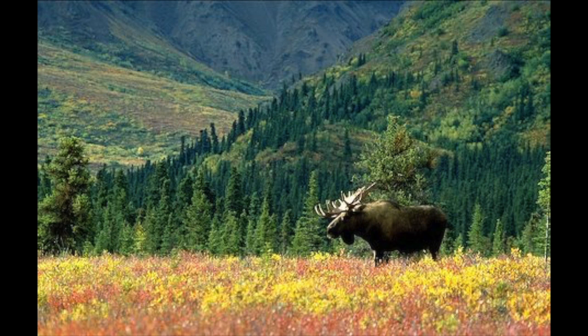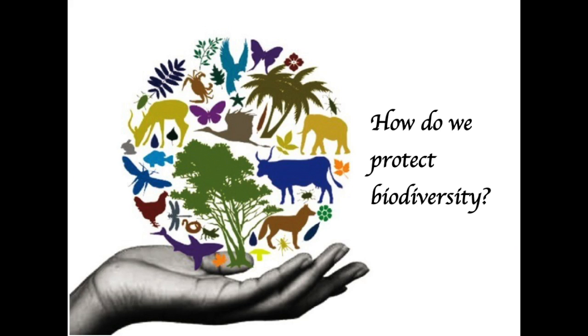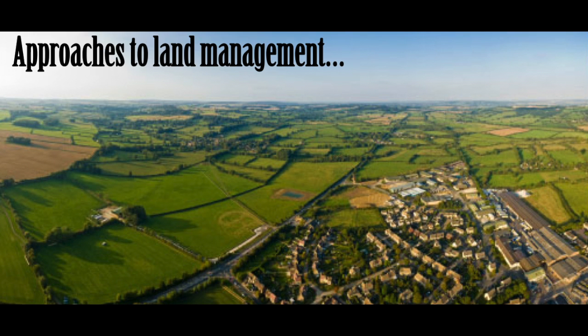In order to conserve biodiversity, land conservation and management is critical. Some of the land management approaches include adaptive land management and small loss big gain methods. Adaptive management is used to better meet the needs of ecosystems and the usefulness of its resources.